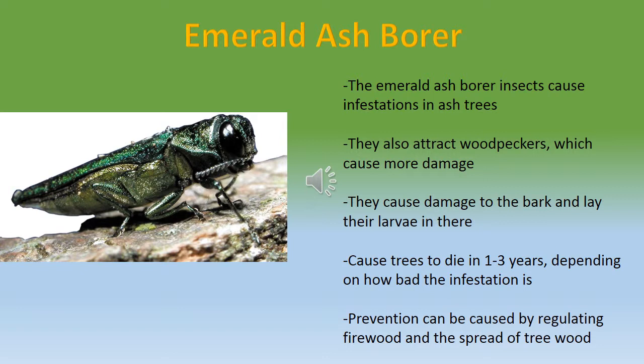Some symptoms of the emerald ash borer on an ash tree include dieback of the crown, with branches toward the canopy that are more dead. Epicormic sprouting can also occur, meaning random branches and sprouts appear throughout the tree where they're not usually supposed to. They can also cause the bark to split and attract woodpeckers.